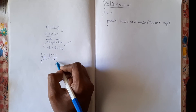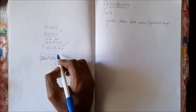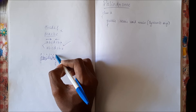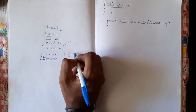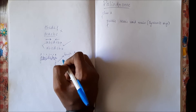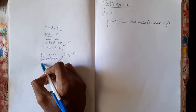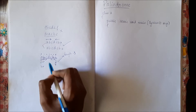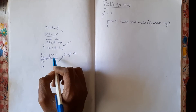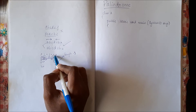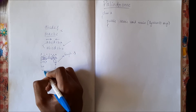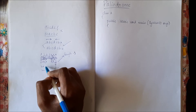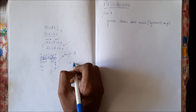We keep one variable i and one variable j. i will start from 0, and j will start from the length of the string minus 1. The length of the string is 7 but the index ends at 6, so j starts at length minus 1. We check if the character at the ith location and jth location are the same; if they are, we increment i and decrement j, and this keeps going until i is less than j.